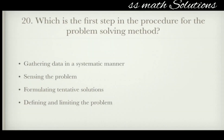Which is the first step in the procedure for the problem solving method? Options: gathering data in a systematic manner, sensing the problem, formulating tentative solutions, defining and limiting the problem. The first step is sensing the problem.